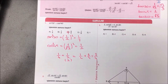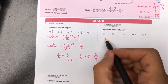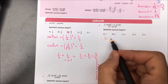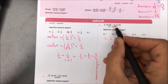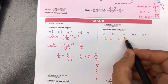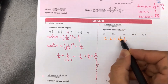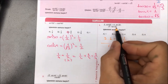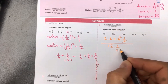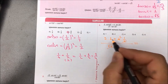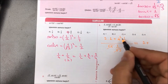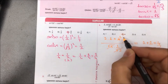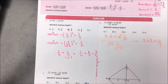Üçüncü soruda 2·cot(45) + 4·sin(30) / [√3·tan(30)] hesaplanıyor. cot(45) = tan(45) = 1, dolayısıyla 2·1 = 2. sin(30) = 1/2, 4·(1/2) = 2. tan(30) = 1/√3; √3·(1/√3) = 1, sadeleşir. 2 + 2/1 = 4. Aradığımız yanıt 4 olarak bulunur.